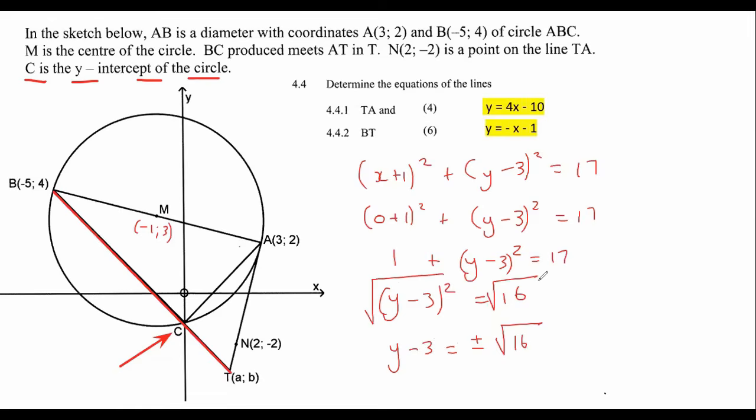If we work this out, we get Y minus 3 equals plus and minus 4. So we're going to get two answers now: Y equals 7 or Y equals minus 1. Okay, so there's two Y-intercepts. The one Y-intercept is obviously up here, that would be Y equals 7. And the other Y-intercept is this one down here, which would obviously be Y equals negative 1.